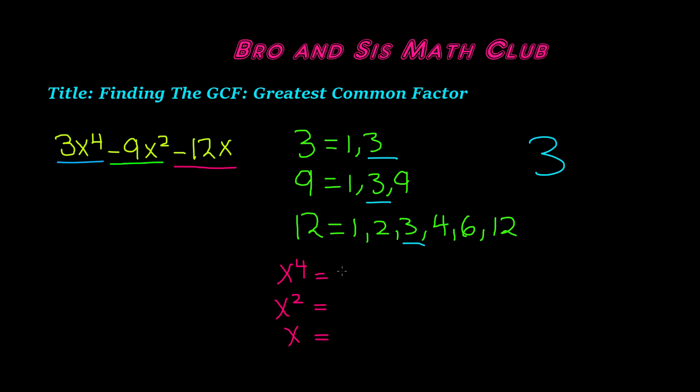In each of these, x^4, x^2, and x, all of them have the same factor of x. Because when you multiply x four times, you get x^4. When you multiply x twice, you get x^2. And when you have simply x to the first power, you have x. So their greatest common factor is x.